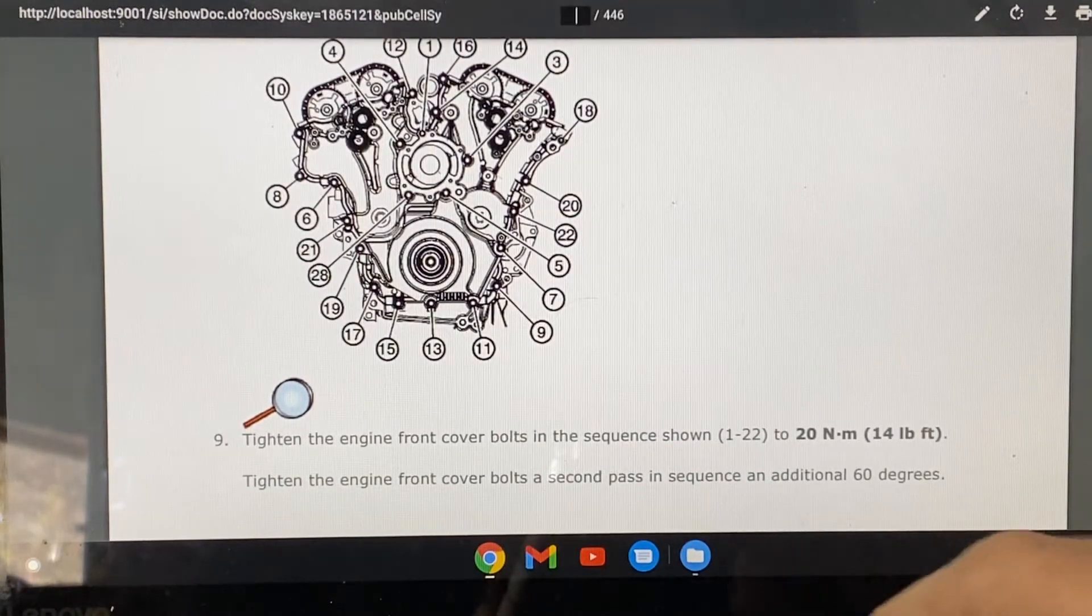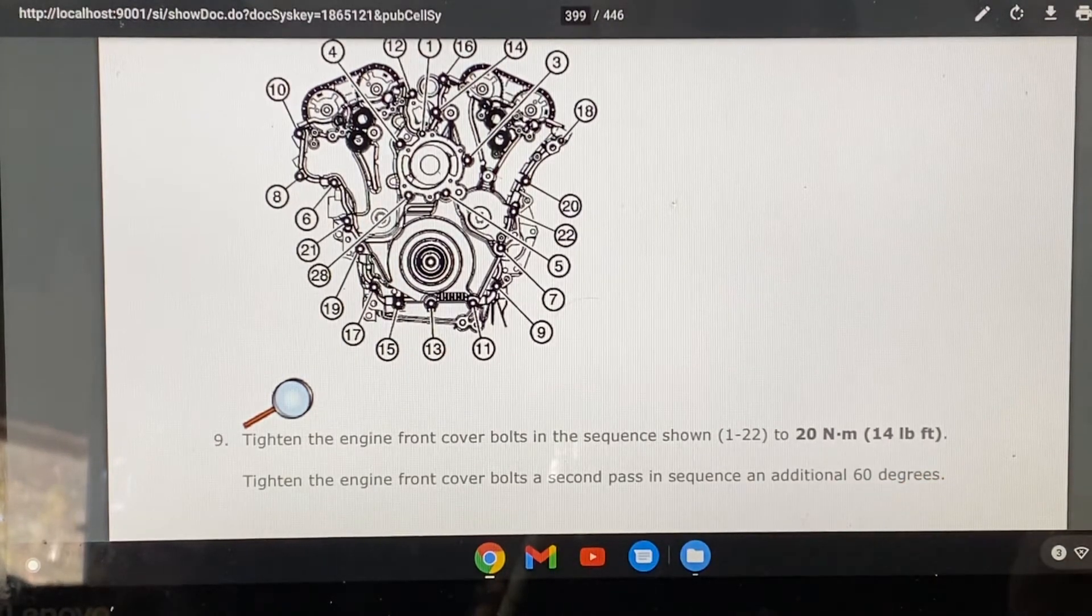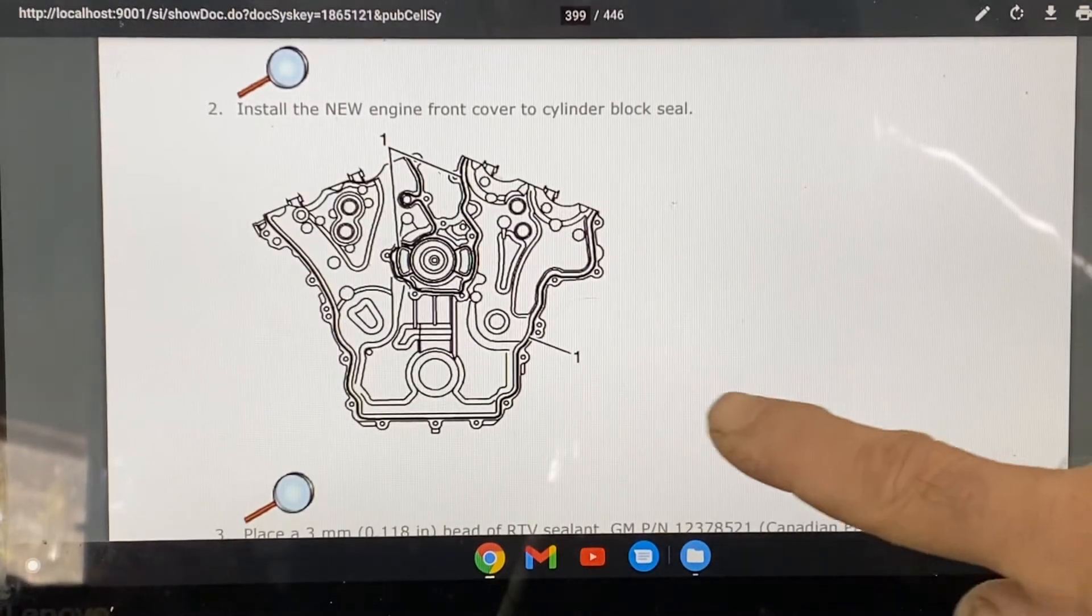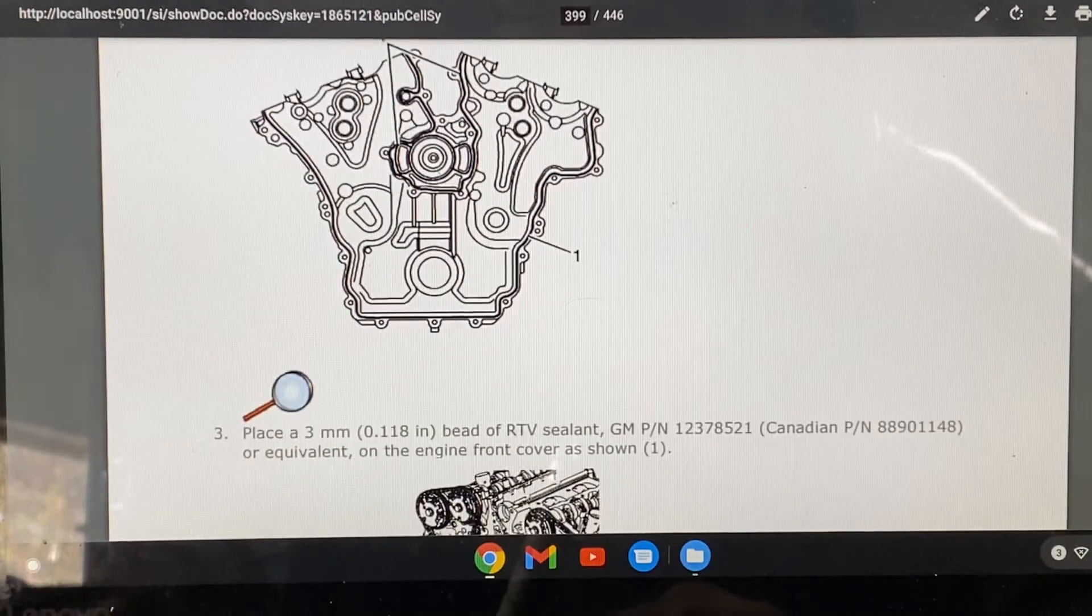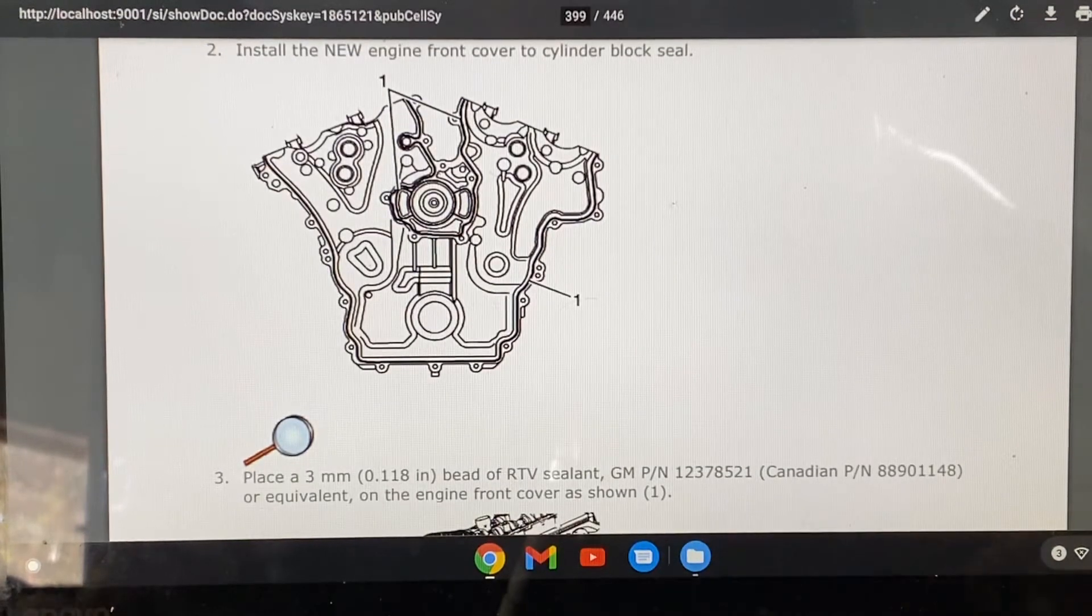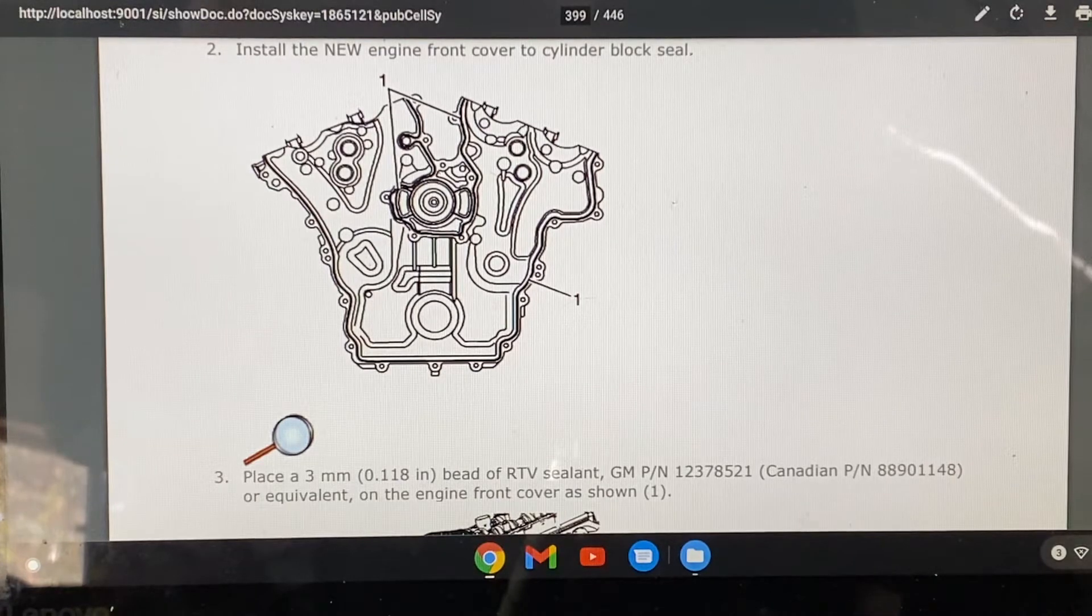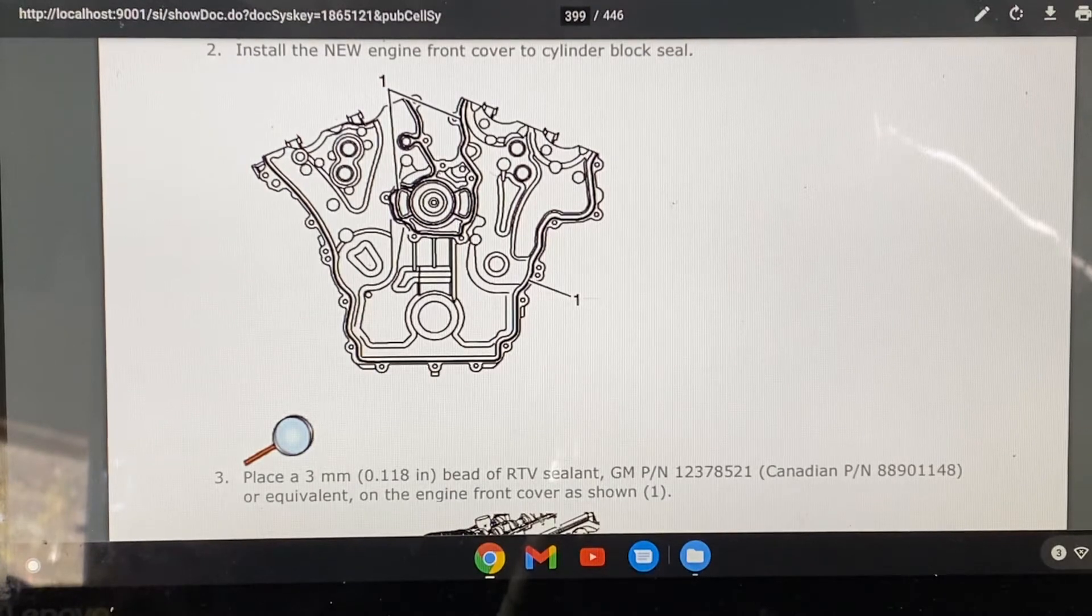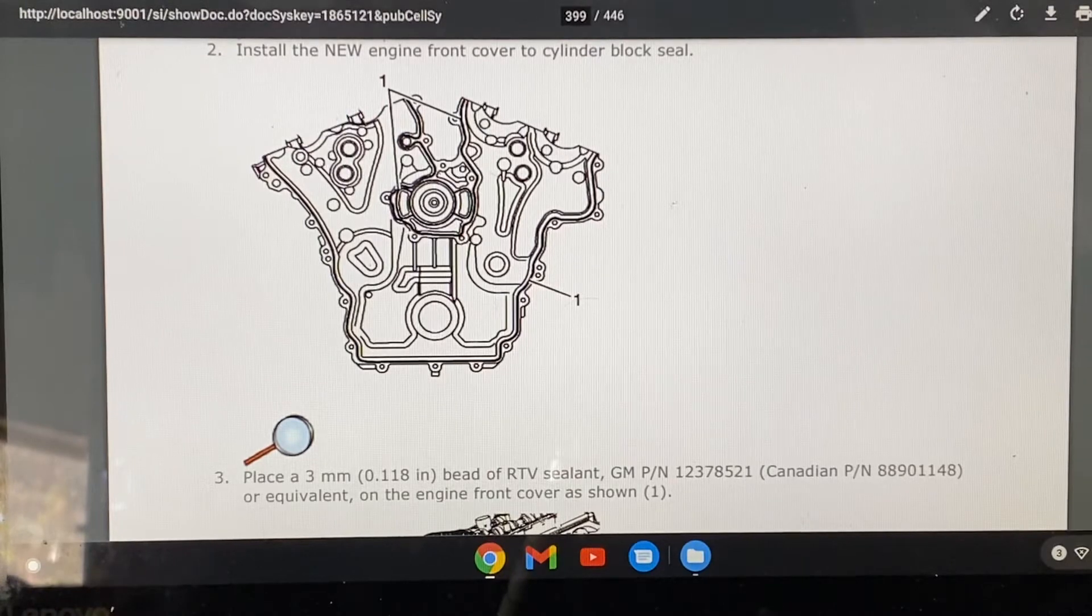This one is where they want the sealant placed. They tell you the three millimeter bead, blah blah blah. When I worked at the dealerships they call that type FIP, form-in-place gasket. It's basically the Permatex ultra gray, so when you buy it at your auto parts store, that's what you're looking for.